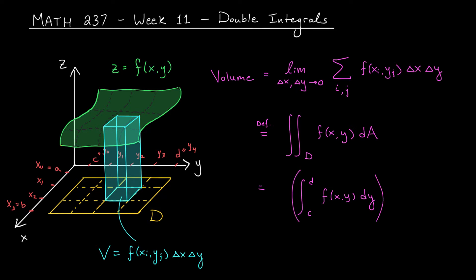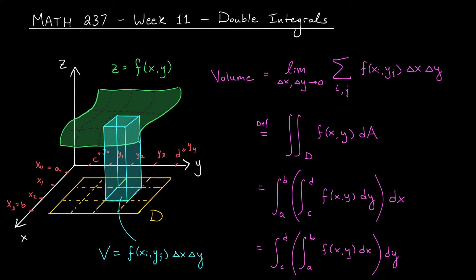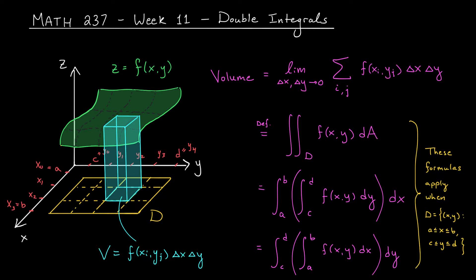Then we integrate with respect to the other variable, giving the integral from a to b of this expression dx. If we're integrating over a nice rectangular region where x and y are bounded between constants a, b, c, and d, the order of these integrals doesn't matter — integrating first with respect to x and then y gives the same result. But in situations where your region D is more complicated, it's more challenging to set up these integrals and to swap the order. Just take this as a word of warning.